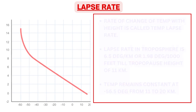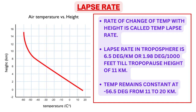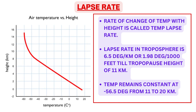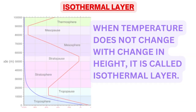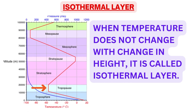The rate of change of temperature with height is called temperature lapse rate. Lapse rate in the troposphere is 6.5 degrees per kilometer, or 1.98 degrees per 1000 feet, up to the tropopause height of 11 kilometers. Above 11 kilometers up to 20 kilometers, the temperature remains constant at minus 56.5 degrees. As per ISA, the mean sea level temperature is considered to be plus 15 degrees Celsius. When temperature does not change with height, it is called an isothermal layer.